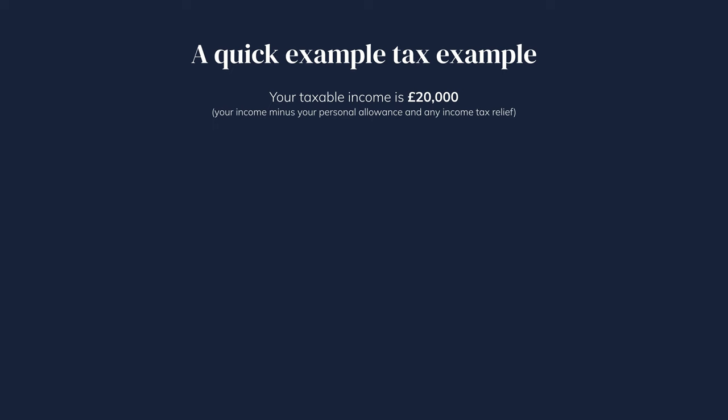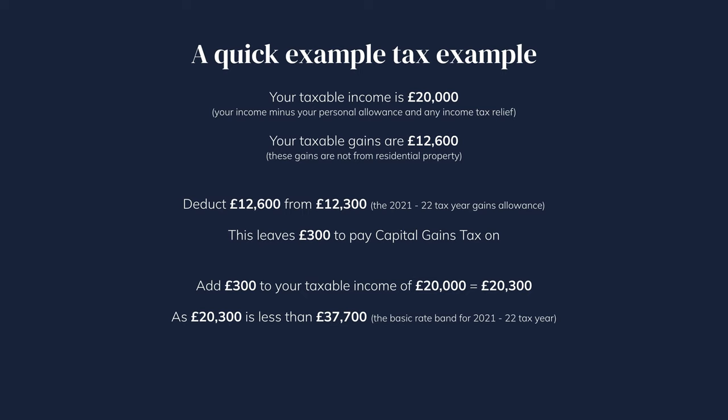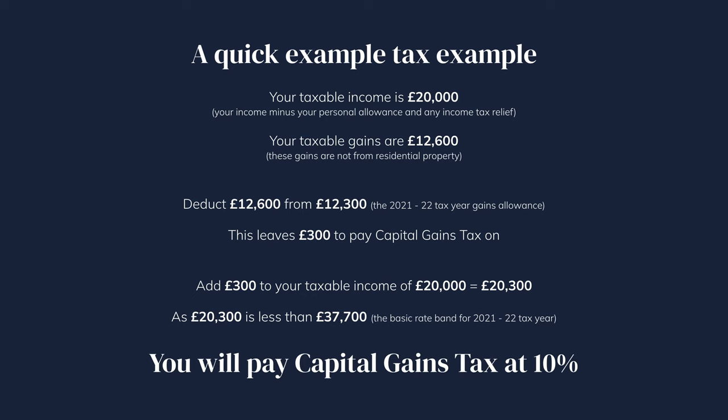Here's an example. Your taxable income — your income minus your personal allowance and any income tax relief — is £20,000, and your taxable gains are £12,600. Your gains are not from residential property. First, deduct the capital gains tax-free allowance from your taxable gain. For the 2021-22 tax year the allowance is £12,300, so this will leave you with £300 to pay tax on. Add this amount to your taxable income, and because the combined amount of £20,300 is less than £37,700 — the basic rate band for the 2021-22 tax year — you will pay capital gains tax at 10%, meaning you'll pay £30 in capital gains tax. You can use your tax-free allowance against the gains that would be charged at the highest rate, for example where you would pay 28% tax. Trustees or personal representatives of someone who's died pay 28% on residential property and 20% on other chargeable assets. You'll pay 10% if you're a sole trader or partnership and your gains qualify for business asset disposal relief.